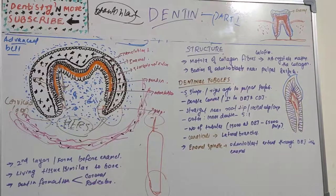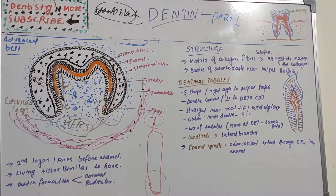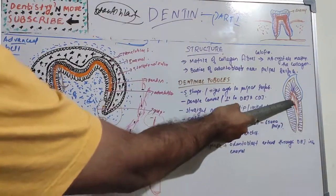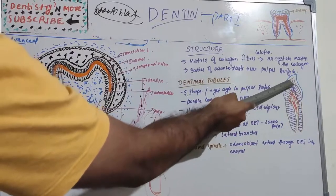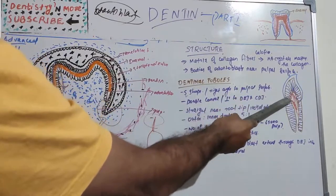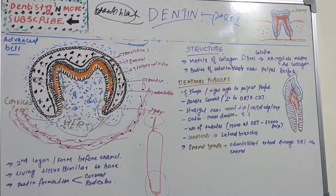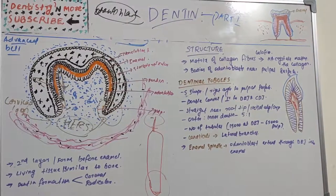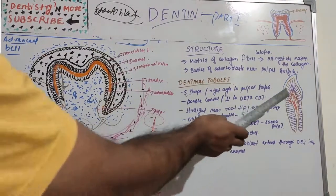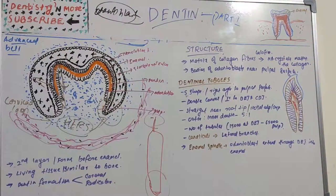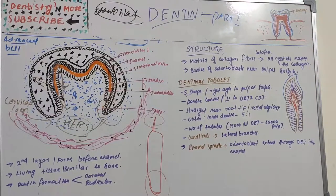Each cell gives rise to one process which traverses the predentine and calcified dentine within one tubule, and terminates in a branching network to the DEJ or CEJ. It starts from the pulpal surface and terminates at the dentino-enamel junction in the crown, or the cemento-dentinal junction in the root portion where cementum and dentine meet.